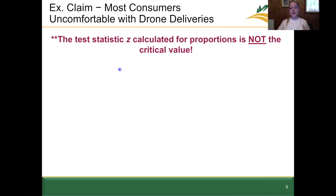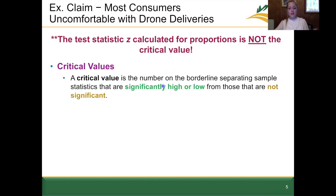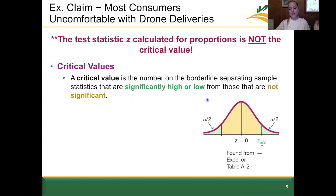One important note: our test statistic, the z-value, is absolutely not the same thing as our critical value. When we first learned about critical values, we learned about z-alpha over 2 for a normal distribution, and t-alpha over 2 for a student t distribution. A critical value is the number on the borderline separating sample statistics that are significantly high or low from those that are not significant. To visualize this, on a normal distribution, the left tail contains values that are significantly low, and the right tail contains values that are significantly high.